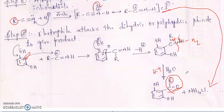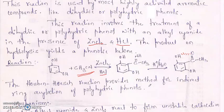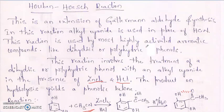If the alkyl group R were hydrogen, it would give an aldehyde — that would be Gattermann's reaction. The Hoesch reaction uses alkyl cyanide, so R may be methyl or any ethyl group, giving a ketone as the product. This reaction is called the Hoesch reaction. Study well, students. Thank you.